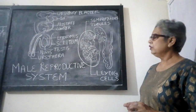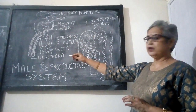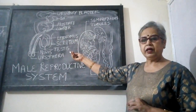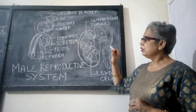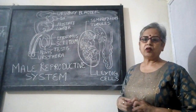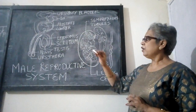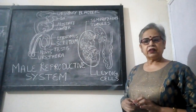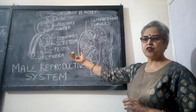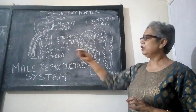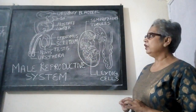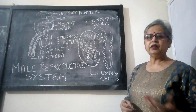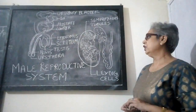This semen is ejaculated and transferred to the female genital tract with the help of the penis. The accessory sex organs are also very important. The penis has a rich supply of blood so that during sexual intercourse, the increased flow of blood causes erection, making it easier to pass semen into the female genital tract.